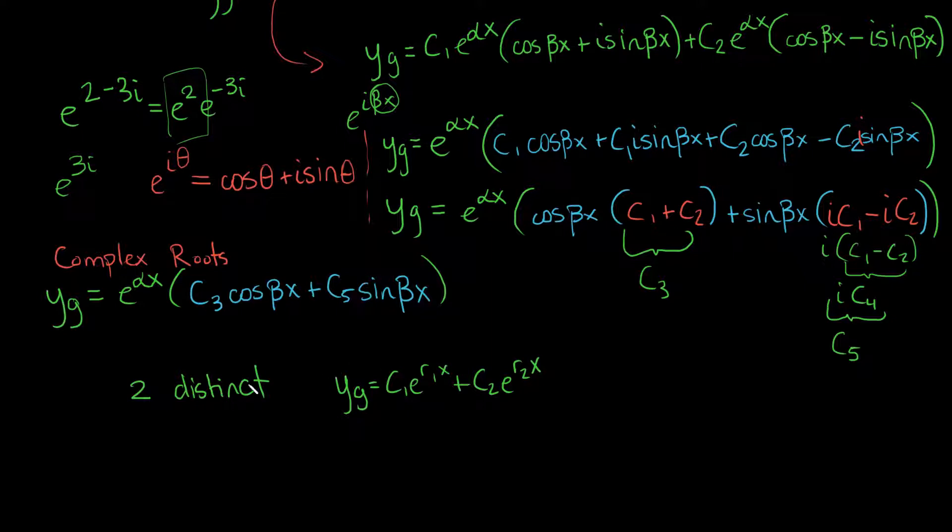But in the case where we had complex roots, this is almost like a subpoint, then in the case where we had complex roots, what we had is that we can simplify this all down to the general solution is equal to e to the real component of the complex roots times x times some constant, which I'll call c1, times cosine of your imaginary part of your root, beta x, plus c2 times sine beta x. And remember, these are different c1s and c2s from our arbitrary constants up there.